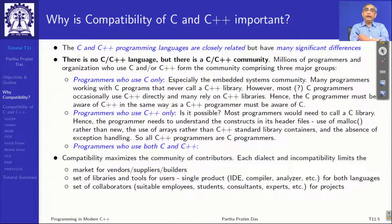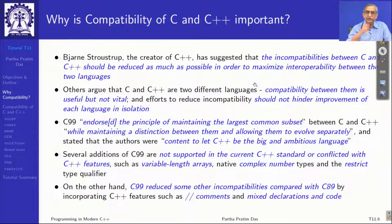And certainly there is a big third community who use C and C++ both seamlessly. So compatibility will maximize the community of builders. The more we can make codes compatible, we will have more users, better market for libraries, better set of tools, and more collaborators.